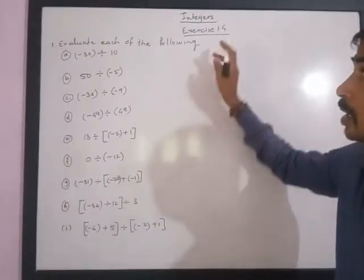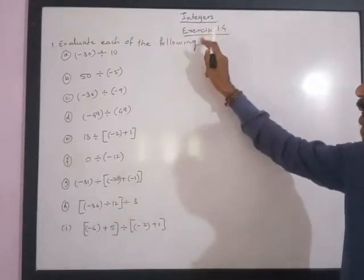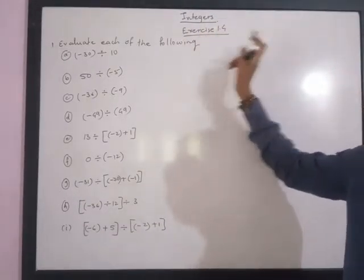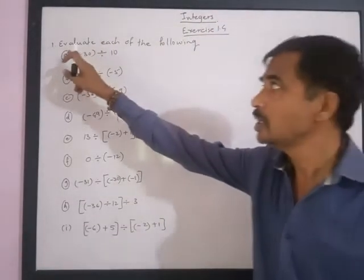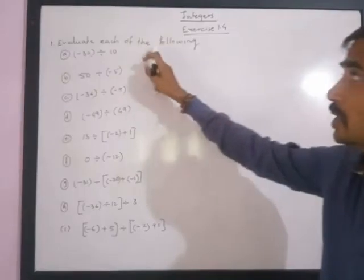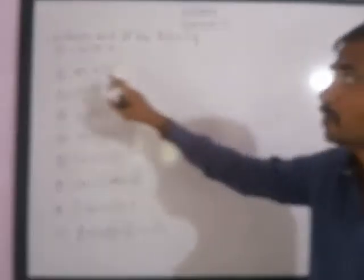Dear friends, in the Integer chapter, Exercise 1.4, the first question is: evaluate each of the following. In the first case, negative 30 divided by 10.